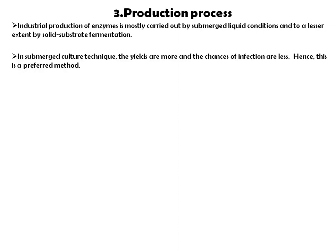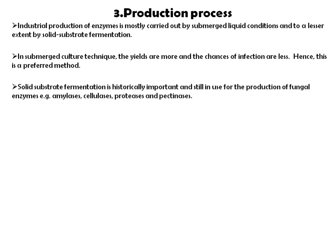In submerged culture technique, yields are higher and chances of infection are less, hence it is the preferred method. An additional advantage is that it is easy to mix all the ingredients with the inoculum and adjust pH and temperature since all content within the fermenter can be moved easily. In solid substrate fermentation, proper mixing is not possible since the medium is already solid. Solid substrate fermentation is historically important and still used for the production of fungal enzymes such as amylase, cellulases, protease, and pectinase. The medium can be sterilized by batch or continuous sterilization.